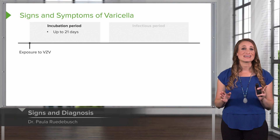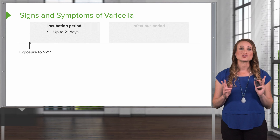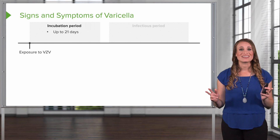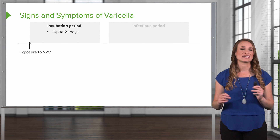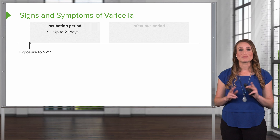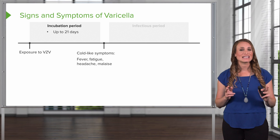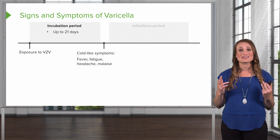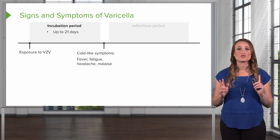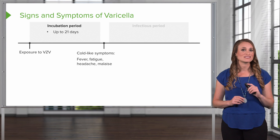Here we see the timeline of the signs and symptoms of varicella. Your patient is going to be exposed to the virus, then enter the incubation period, which can be up to 21 days before they start showing symptoms. Next, your patient is going to develop classic cold-like symptoms — fever, fatigue, headache, malaise, runny nose, and a cough. To assist in your diagnosis, always inquire whether the patient had cold-like symptoms preceding their rash.